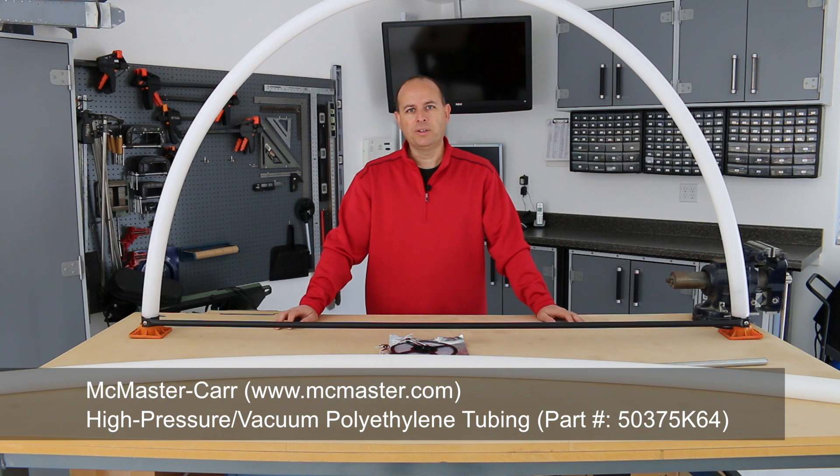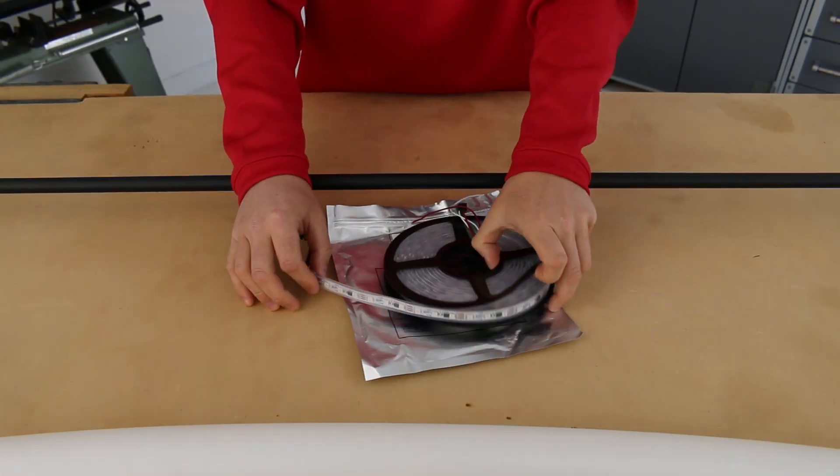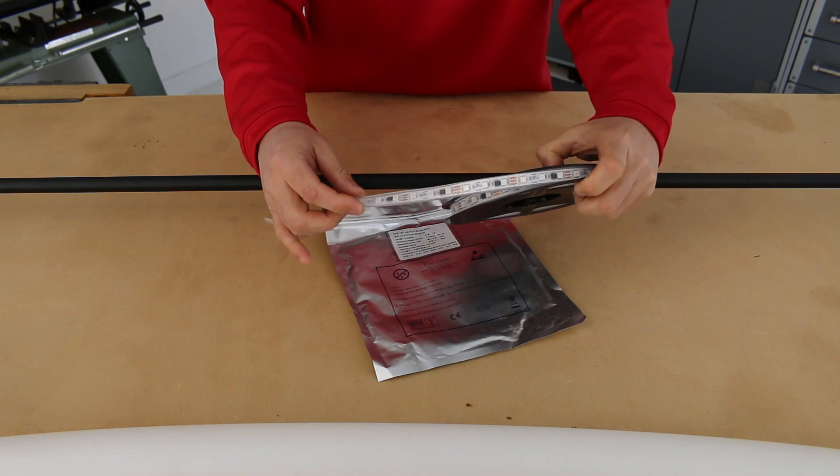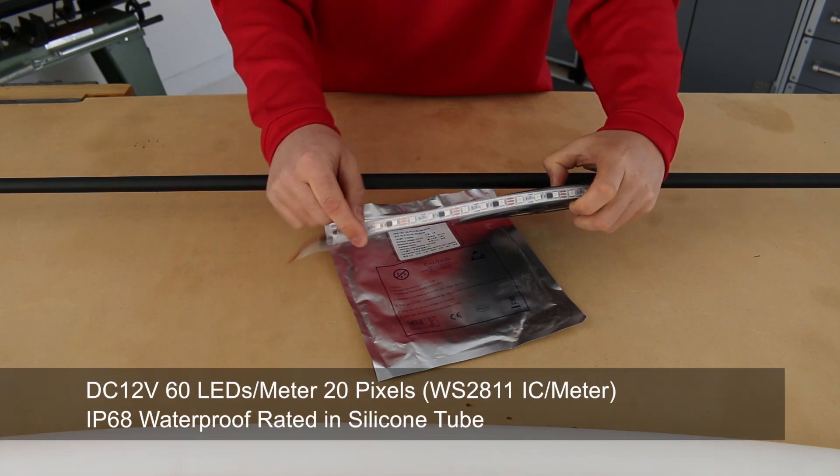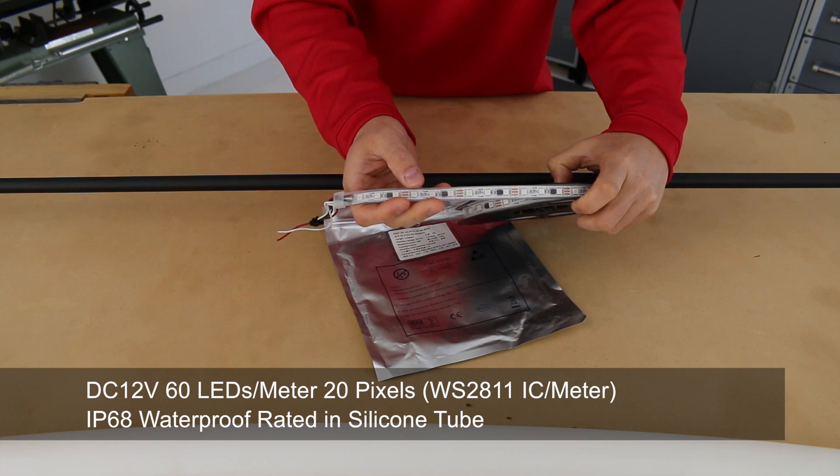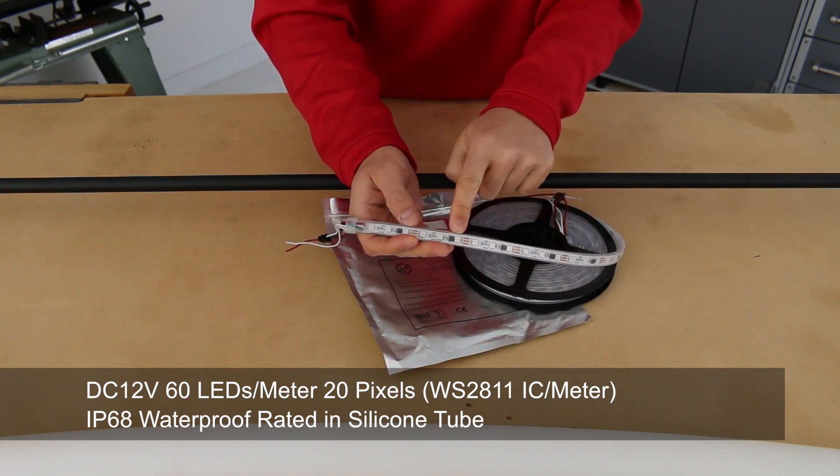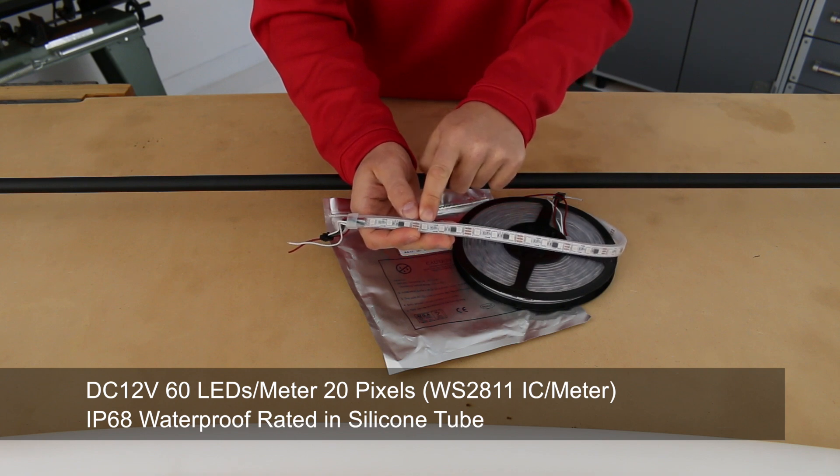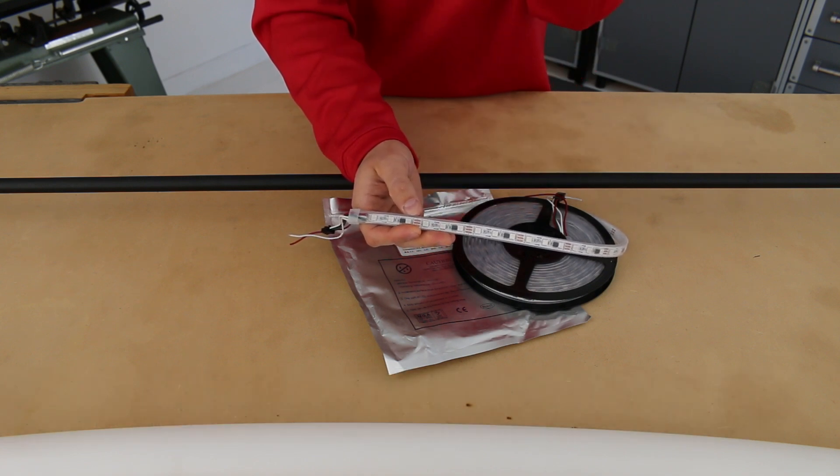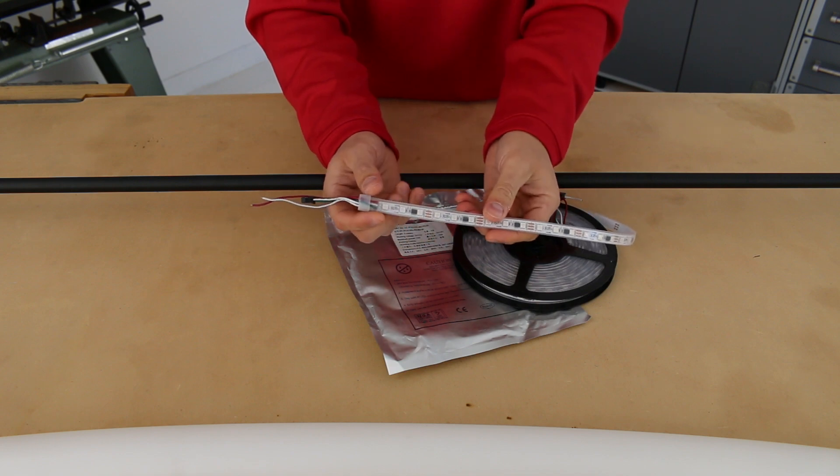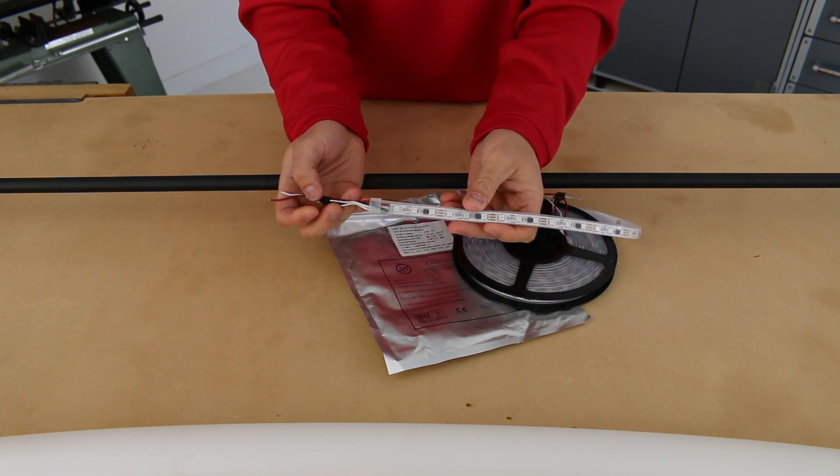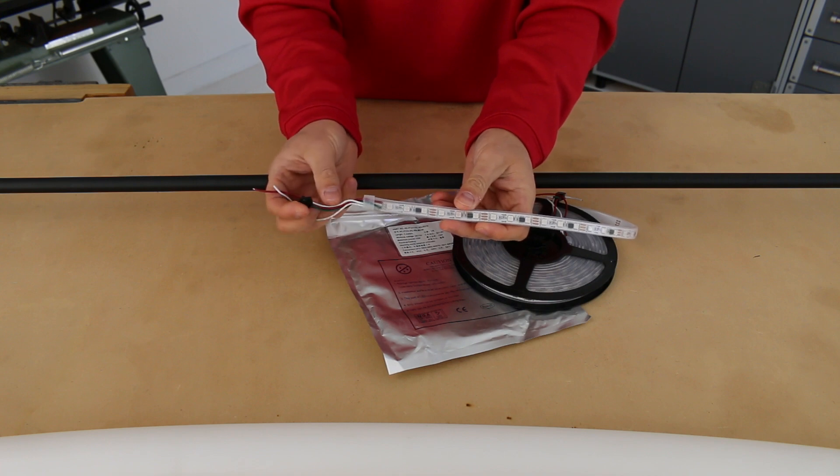The lights that I used in this arch are actually pixels. This is a pixel strip. On this strip there are three individual clusters per pixel. Each cluster has three LED lights in it, but the three clusters are controlled as one pixel. In order to use a pixel strip such as this, you need to have a controller.